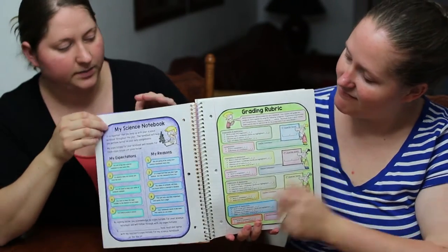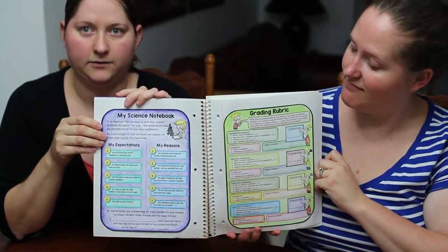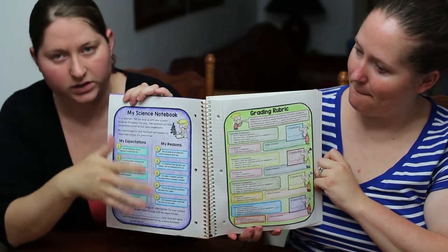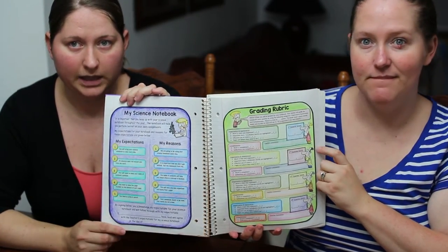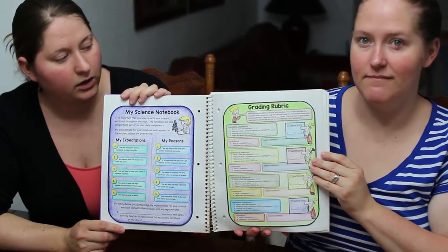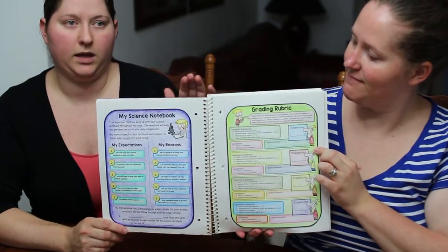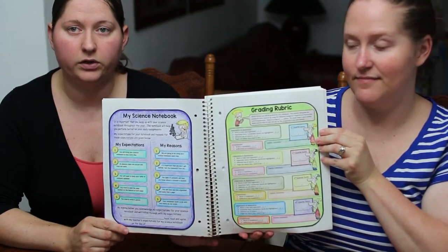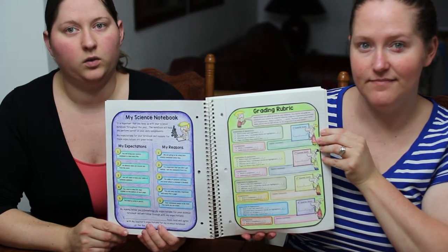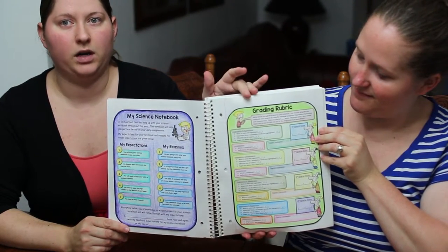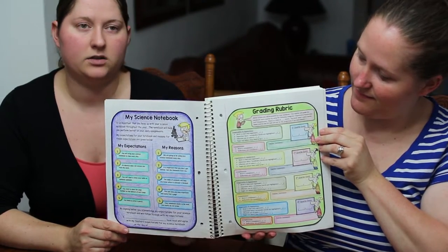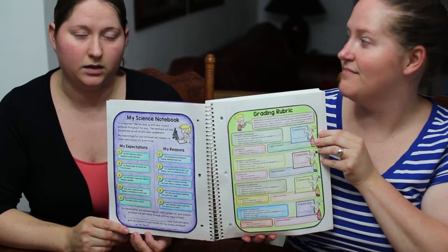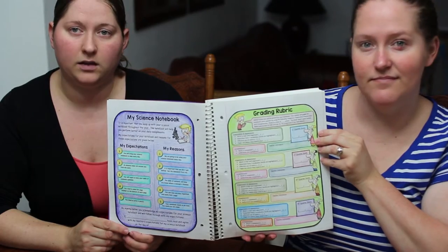Next is our expectations page, which informs students how you expect their notebook to look. Students will read it, sign it, and date it. Then we have the grading rubric — I love this because students know from the very beginning exactly how they'll be graded on their notebook. Categories include organization, completeness, and appearance, and the grading scale is blank so you can enter your own numbers.